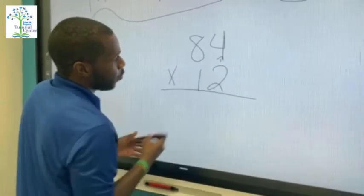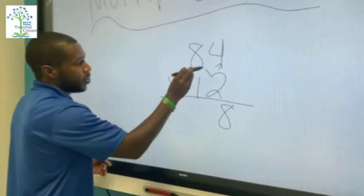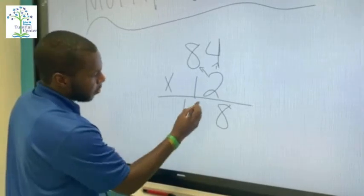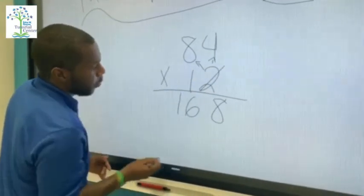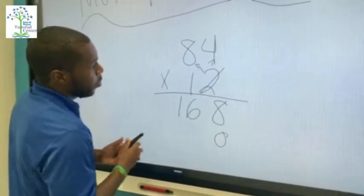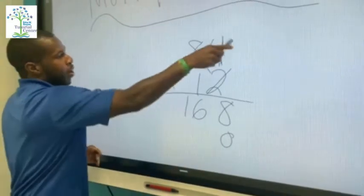Two times four equals eight. Two times eight equals 16. I'm gonna cross out this number, but we're gonna put a zero there for that place value and move on to our one. Right to left, remember.